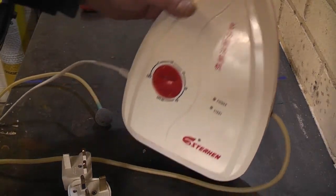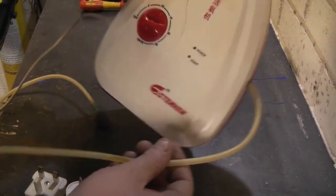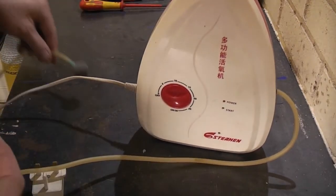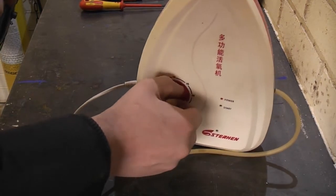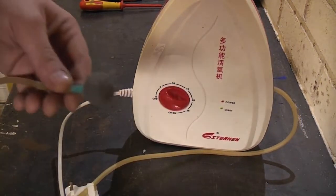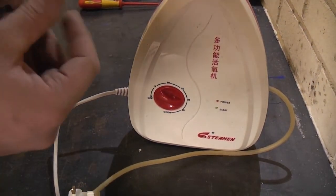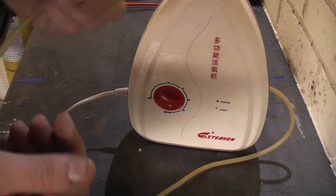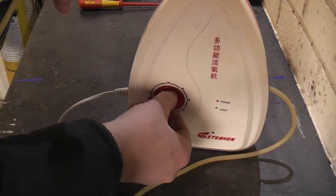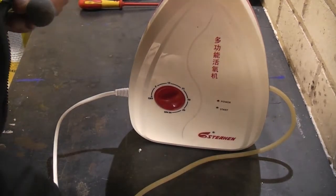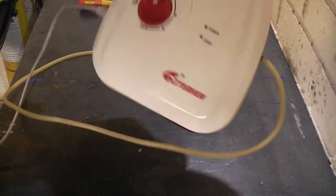This is a cheap Chinese ozone generator I purchased a few years ago from eBay. It works and produces a syndrome of ozone. It comes with one of these diffuser stones. It produces quite a substantial amount of ozone, but I think I'll take it apart and have a look inside.